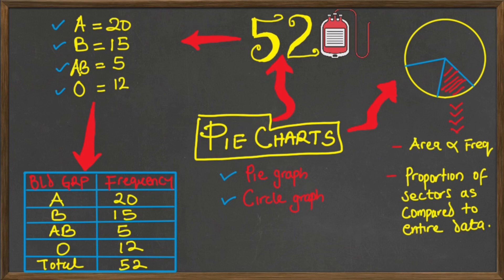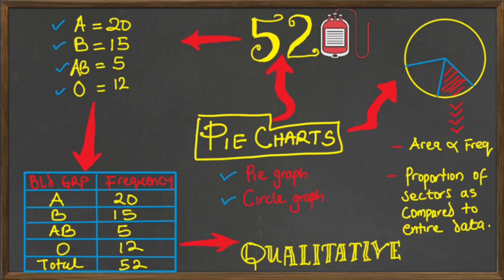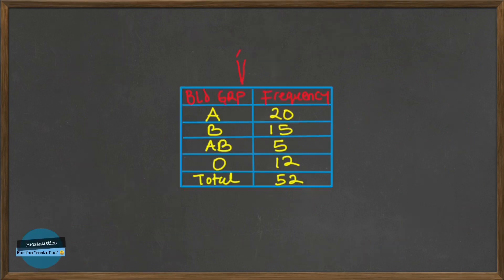So first let's consider the variable type. This is a qualitative variable. And so we can call it a categorical variable. It has categories.